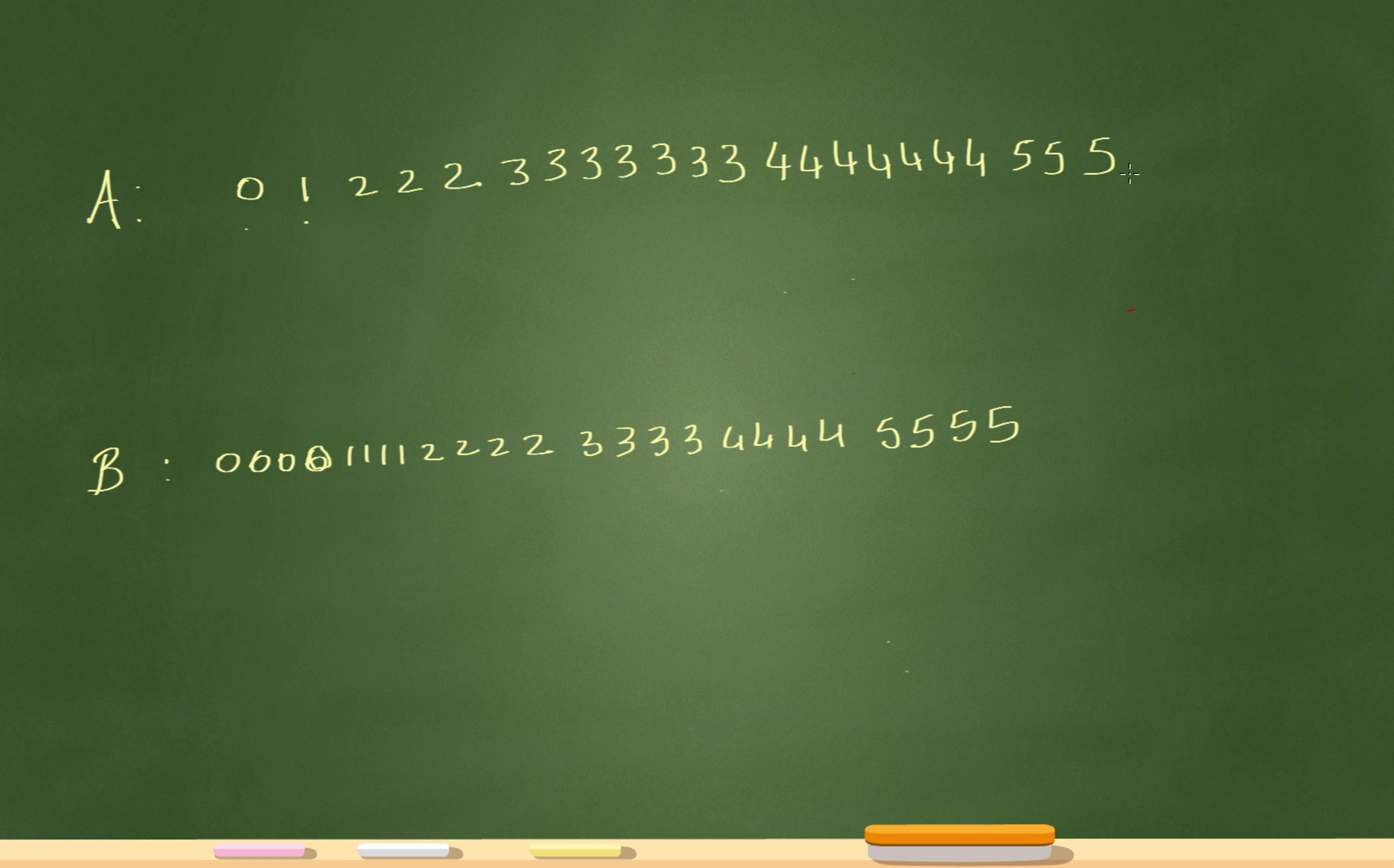So I calculated the mean for this one. When I added up all of these and divided by 22, I got 3.22. That was the mean for class A. And when you calculate the mean for class B, you get 2.5.